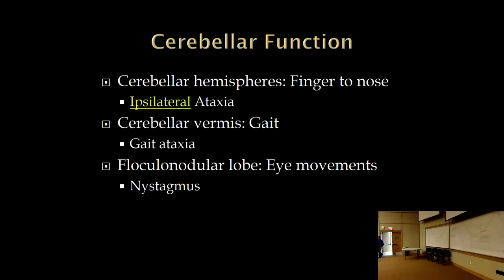Last time we covered the cerebellum. A cerebellar lesion causes ipsilateral ataxia. The general rule is: the further lateral the lesion, the more distal the ataxia. A lesion of the cerebellar hemispheres, which are more lateral, causes a lot of ataxia in the hand — movements are very clumsy. The closer we get to the midline, the more midline the ataxia becomes. The midline portion of the cerebellum is called the cerebellar vermis.